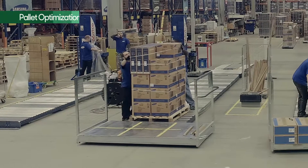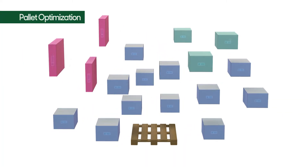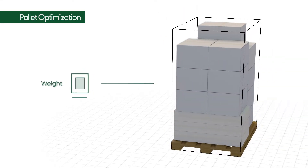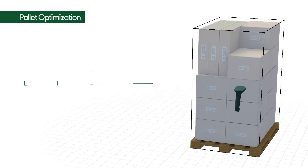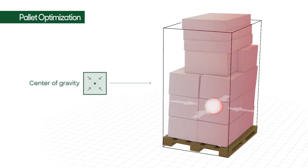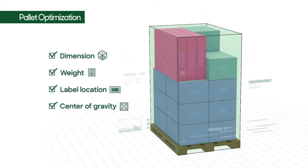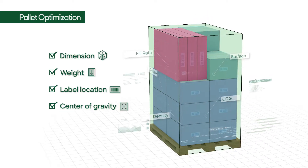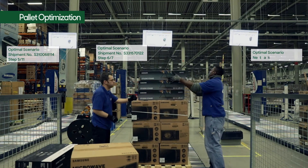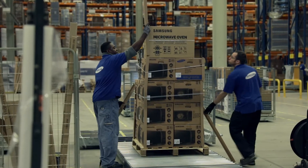Based on this accurate data, Cello Loading Optimizer creates a variety of palletizing scenarios based on product dimension, weight, label location and center of gravity. Each loading scenario is then scored according to certain criteria and the optimal scenario is selected. It is displayed on the monitor in the palletizing area and the operator carries out the pallet loading following the scenario step by step.